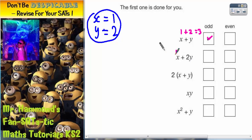x is worth 1 and y is worth 2. So remember 2y is 2 lots of 2, which is 4. So we've now got 1 plus 4 equals 5. So that is odd again.